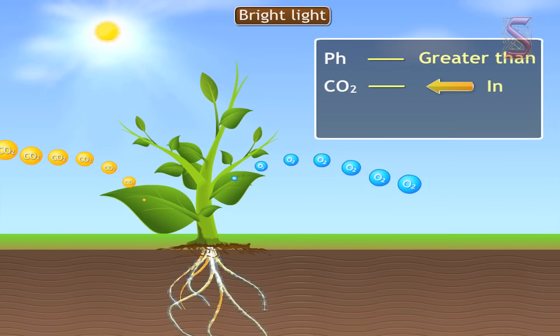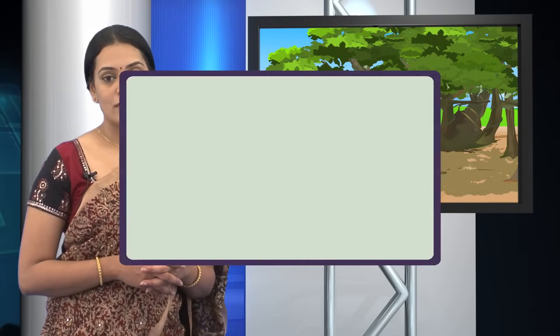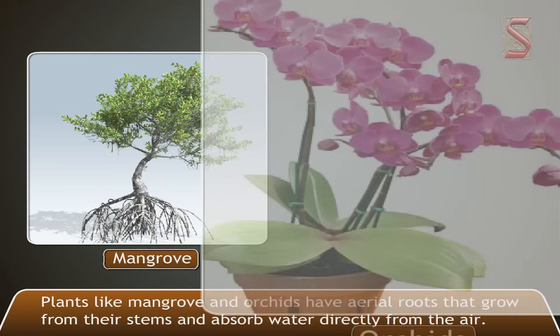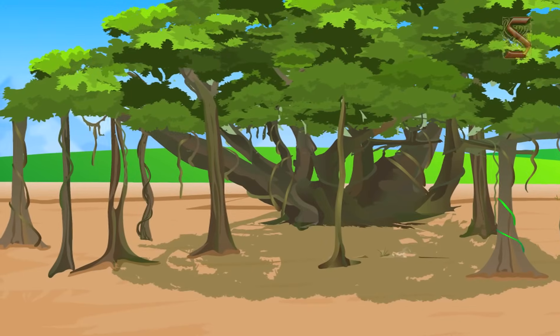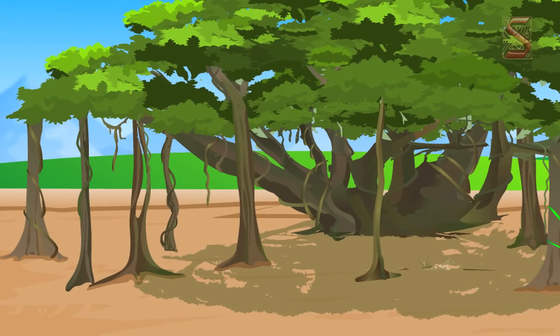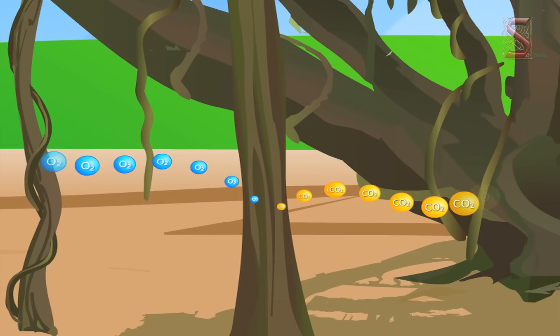You must have heard that some plants have aerial roots also. So how do they work? Let us find out. Some plants like mangrove and orchids have aerial roots, roots that grow from their stems and absorb water directly from the air. In addition to providing structural support, aerial roots play an important part in providing oxygen for respiration. Oxygen enters the trees through the lenticels in the roots.